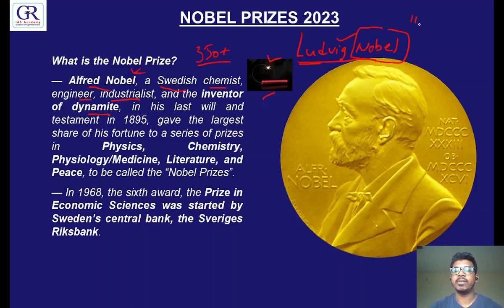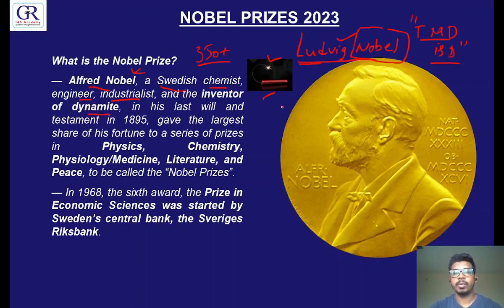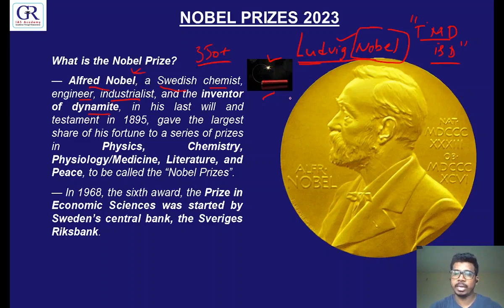Some newspapers published the obituary of Alfred Nobel mistakenly for his brother. One newspaper gave his obituary in a very critical way. The title of the obituary was: 'The merchant of death is dead.' Why did the newspaper put up that title? Because he, being the inventor of dynamite which was used in many wars at that time, was seen as a merchant of death. Sir Alfred Nobel happened to read that particular obituary which was supposed to be of him.